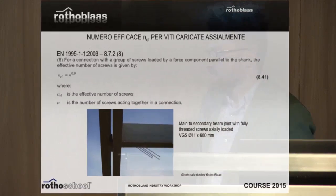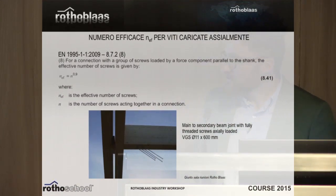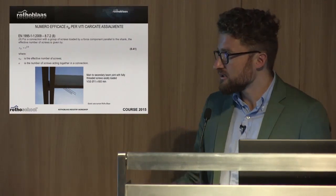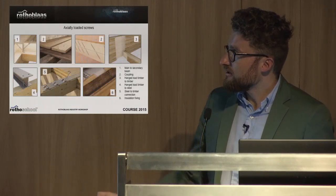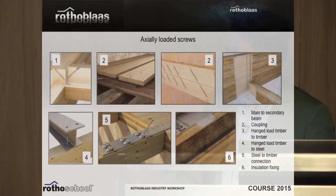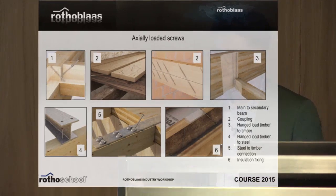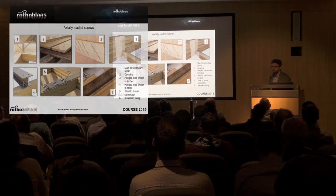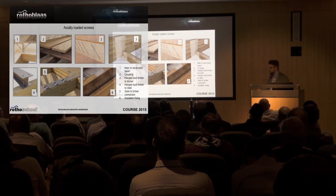At least nowadays Eurocode 5 of 2009 is correct. Here are some examples of structures you can realize: shear forces through inclined screws providing very high force transfer into timber. These are general connections with full thread screws — main to secondary beam, slab reinforcement, coupling of beams, hanging beams, reinforcement, timber to steel connection. The inclined full thread screw is quite well known and well used in the timber design world.